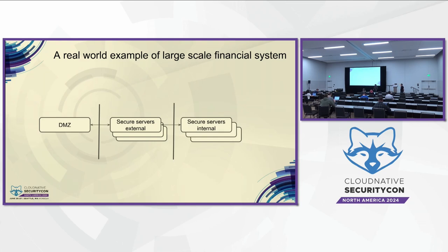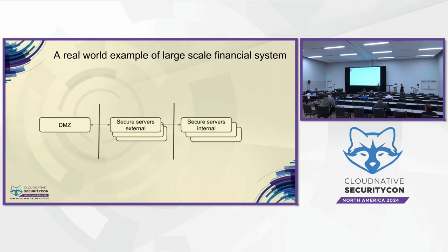How many of you have seen a picture similar to this? This is a top-of-the-line traditional system which processes half of the US economy — a big financial institute. The security was implemented with segmented data centers, hundreds of microservices, typical Java-based applications where a request landed on DMZ, then went to a secure data center, geographically distributed, and from there could talk to other systems.